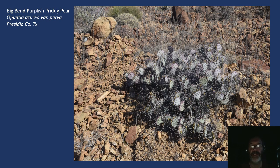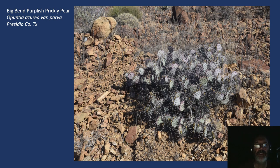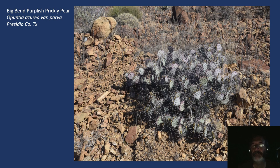Then we get into the Opuntias. I have to admit, they are a tough bunch — I think I have most of these correctly identified, but if I've got any mistakes, I certainly welcome corrections. So this is the Big Bend purplish prickly pear, Opuntia azurea, variety parva, photographed in Presidio County. Very attractive plant — the flowers are yellow with red centers, and between the blue-gray purplish color of the pads and the yellow flowers, they're gorgeous to have in a yard, and not rare. And then Opuntia dulcis — the sweet prickly pear, named for the really tasty fruits it produces.